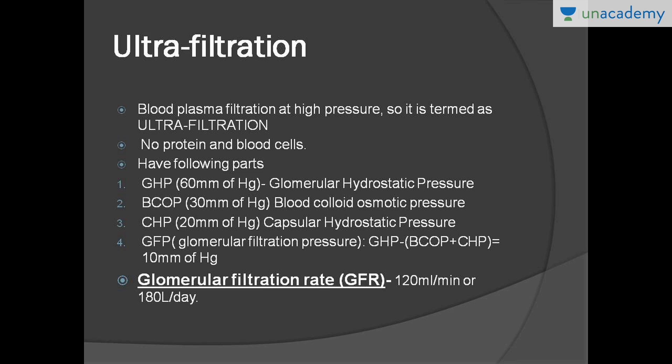Third is capsular hydrostatic pressure — the pressure exerted by fluid already present in the Bowman's capsule — which also counteracts filtration. The net glomerular filtration pressure equals GHP minus blood colloidal osmotic pressure minus capsular hydrostatic pressure, giving a net of 10 mmHg.